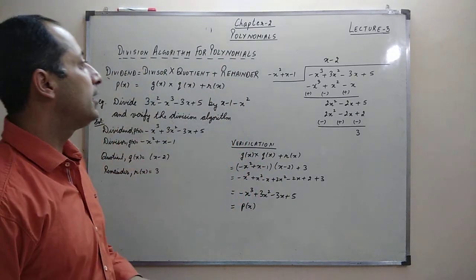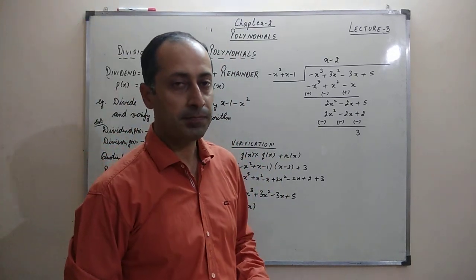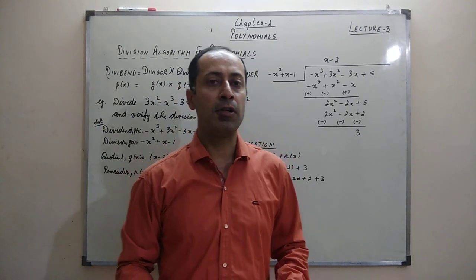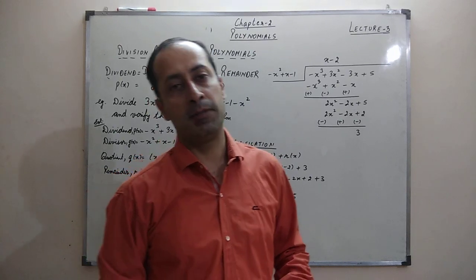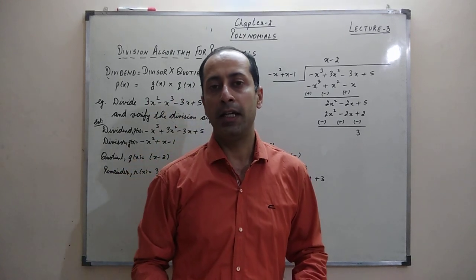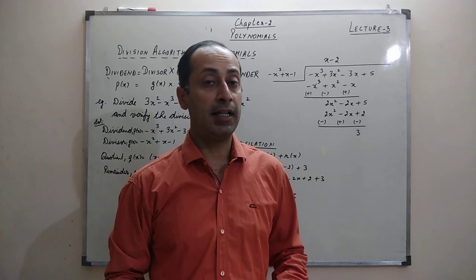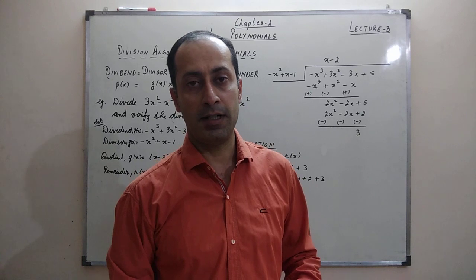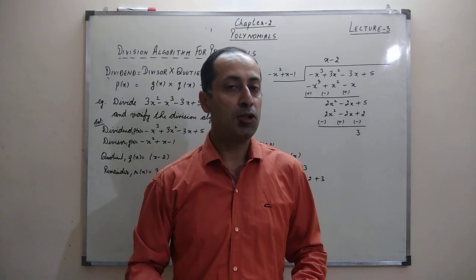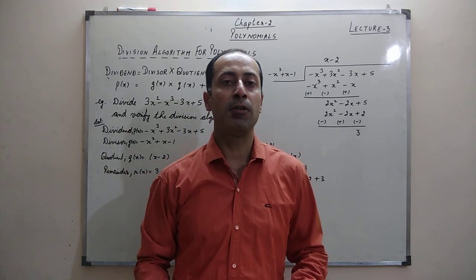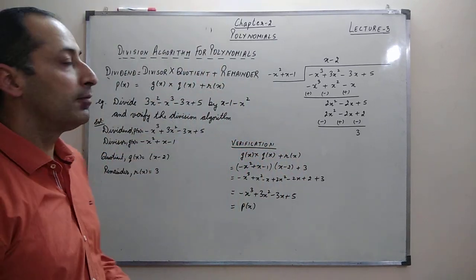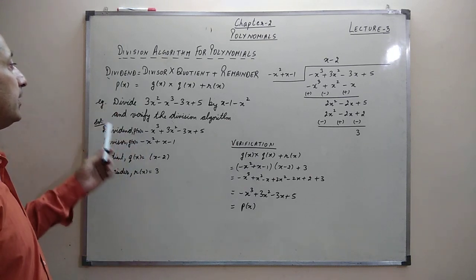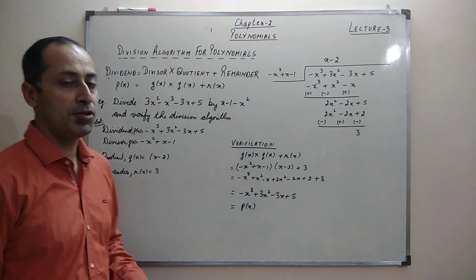Today we are going to discuss the division algorithm for polynomials. You must remember that in Chapter 1 on real numbers, you learned about Euclid's division lemma. According to Euclid's division lemma, if a and b are two numbers such that a is greater than b, then there exist two positive numbers q and r such that a = bq + r. Using that, today we talk about the division algorithm for polynomials.